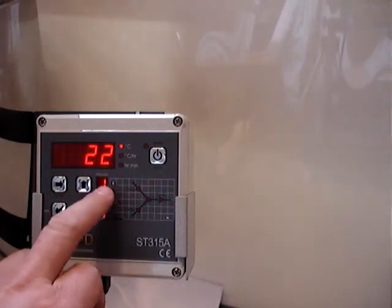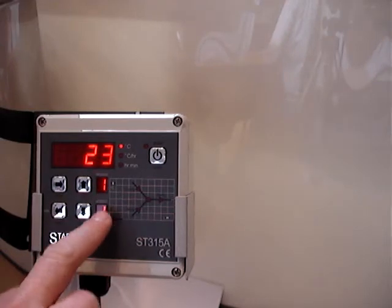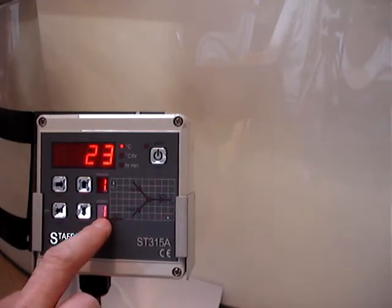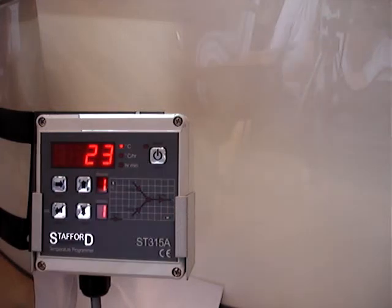As you can see, you've got a program light that tells me which program number I'm on, and which segment I'm on within that program, as well as the current temperature inside the kiln.